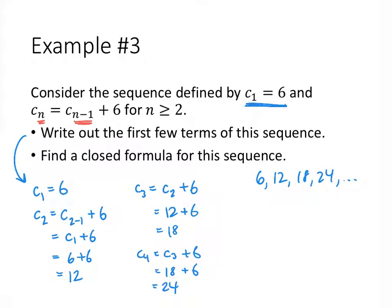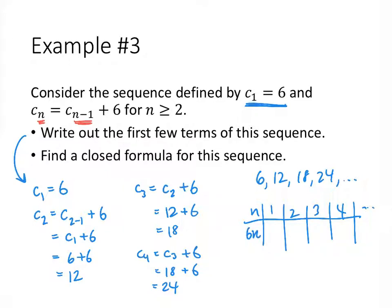Now if we're trying to find a closed formula, our sequence increases by 6 every time, so the easy sequence that goes up by 6 every time would be multiples of 6. Making our little chart: 6 times 1 is 6, 6 times 2 is 12, 6 times 3 is 18, 6 times 4 is 24. That's exactly the sequence we have — we don't have to modify it at all. Our closed formula is c sub n equals 6n.